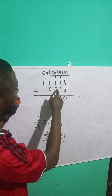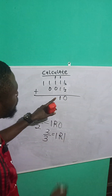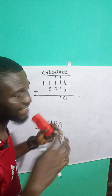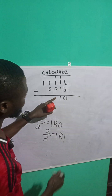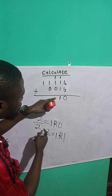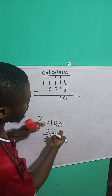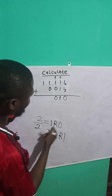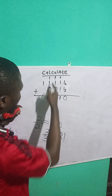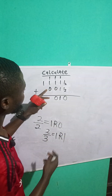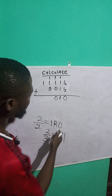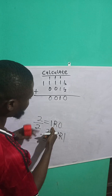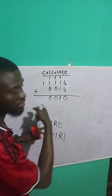1 plus 1 is 2, and we know we cannot write 2 because we need numbers less than 2. So we divide 2 by 2, which gives us 1 remainder 0. This remainder of 0 we bring it down, and this 1 we take to the next place.